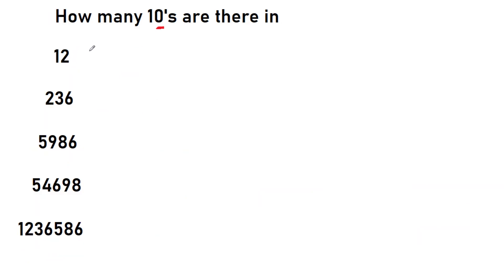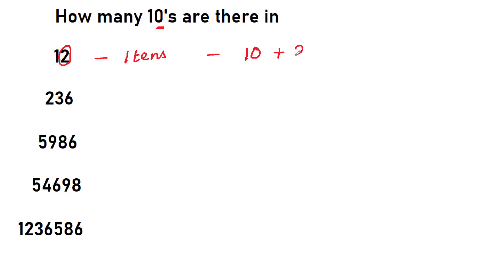Now, how many tens are there in 12? It is similar. For tens, there is one zero. So from the last, you just leave the units place and see the number before — that is 1. So in this question, we are having 1 ten. You can understand why: 12 is actually 10 plus 2. Out of 12, you can make 1 ten. So this has 1 ten.